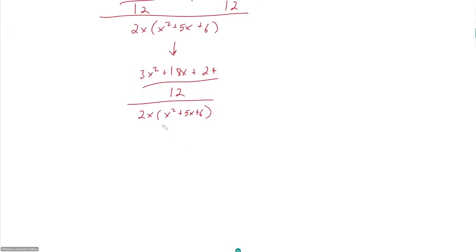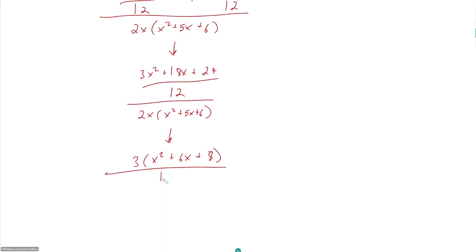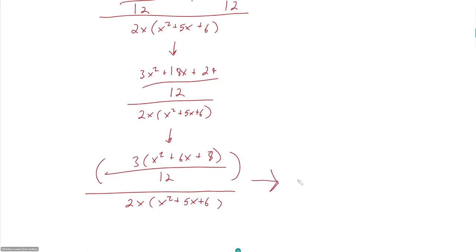Now combine the two fractions in the numerator: 3x² + 6x + 12x + 24 = 3x² + 18x + 24, all over 12, all over 2x(x² + 5x + 6). I can factor a 3 out of the numerator, leaving 3(x² + 6x + 8) over 12. Now I'm happy because I have two quadratics — one in the numerator and one in the denominator — which I should be able to factor.